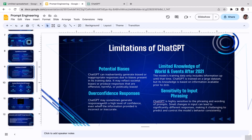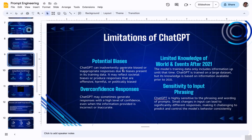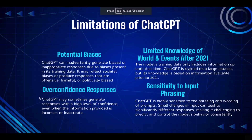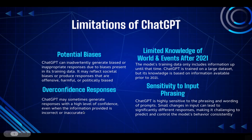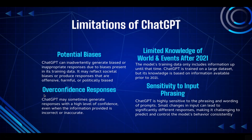The third limitation is overconfident responses. ChatGPT may sometimes generate responses with a high level of confidence even when the information provided is incorrect or inaccurate. This can be quite challenging, especially for people who rely completely on ChatGPT as their main source of information. You still need to do research to make sure the information presented is factually correct. The overconfident tone can make us believe information is correct when it may actually be wrong.